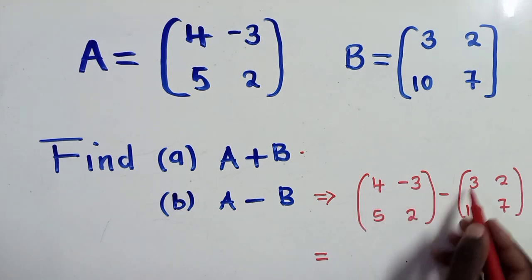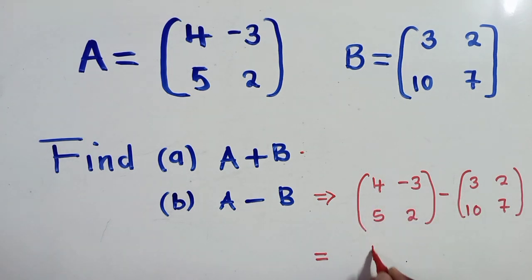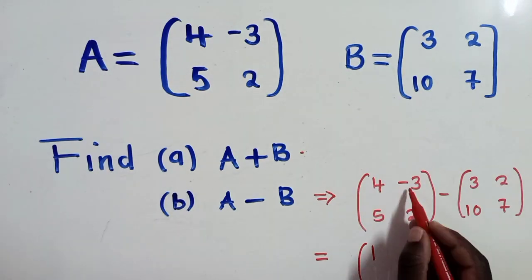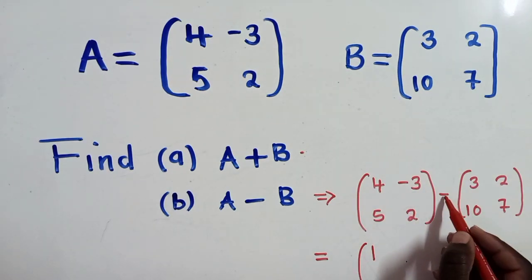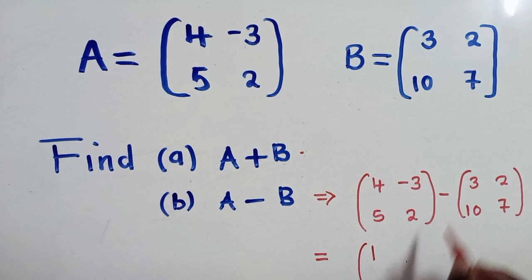So it will be 4 minus 3, that will give us a 1. Minus 3 minus 2 or negative 3 minus 2, that is negative 5.